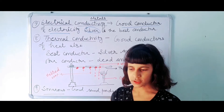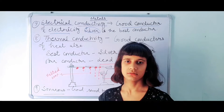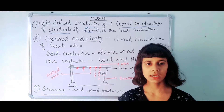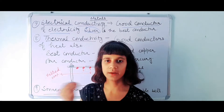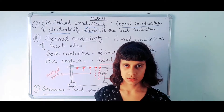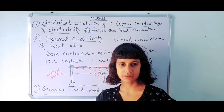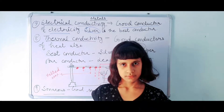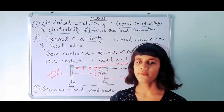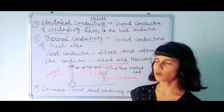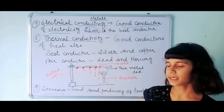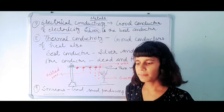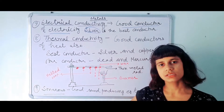Because metals are good conductors of electricity, they are used in making wires — like copper wires and aluminium wires. Our next point is thermal conductivity, which means that metals conduct heat also.